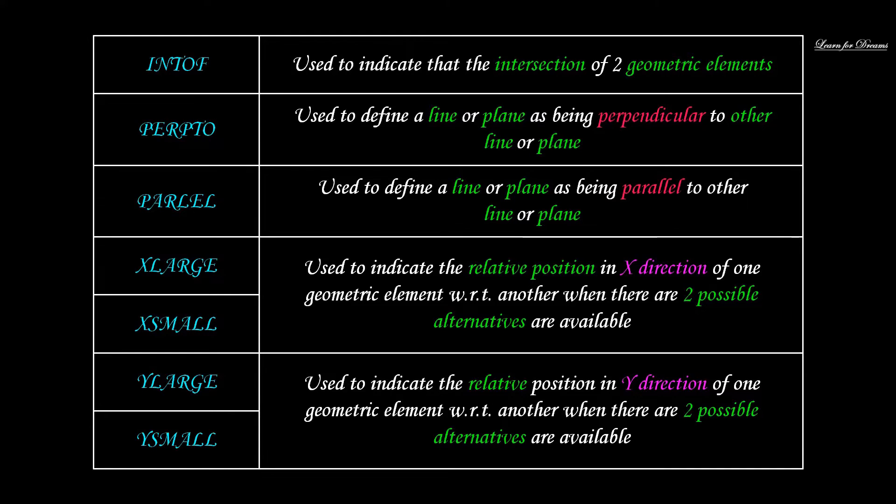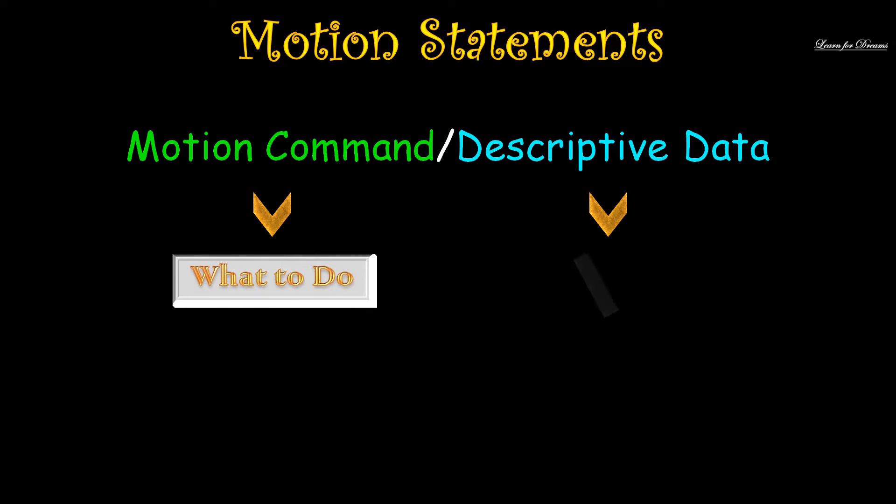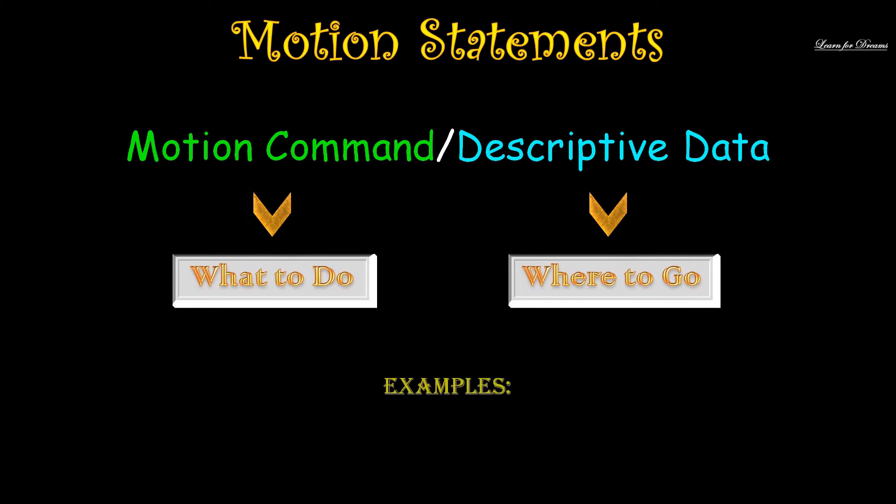The next one is motion statements. The format is: motion command slash descriptive data. Motion command will specify what to do and descriptive data will specify where to go. Let's see some examples: GOTO slash P4 and GODELTA slash 5 3 0, where GOTO and GODELTA are motion commands. Like in G-code M-code programs where G00, G01, G02 are motion commands.